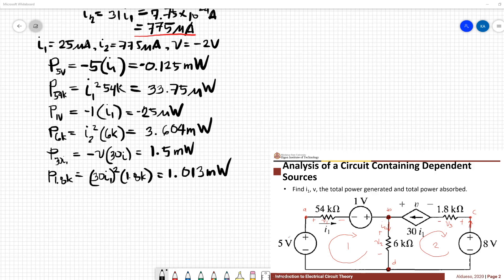And lastly, this 8 volt voltage source. The power of this 8 volt voltage source is negative 8 times 2i1, equivalent to negative 6 milliwatts.